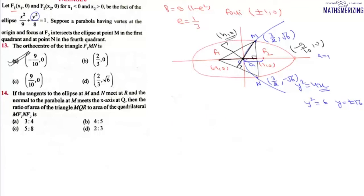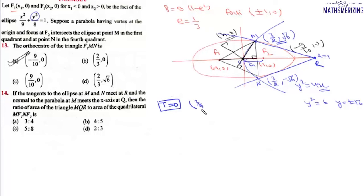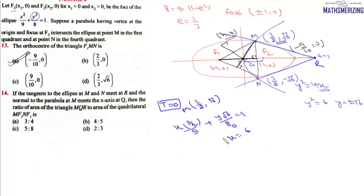The second question: tangents to the ellipse at M and N meet at point R. Using T = 0, the tangent at M = (3/2, √6) is: x·(3/2)/9 + y·√6/8 = 1. By symmetry, the two tangents intersect on the x-axis, so y = 0. Setting y = 0 gives x = 6. Therefore R = (6, 0).